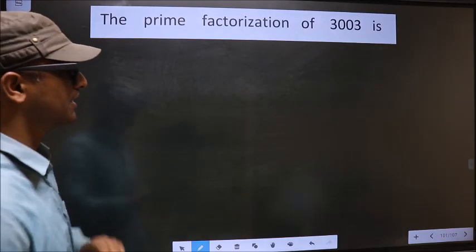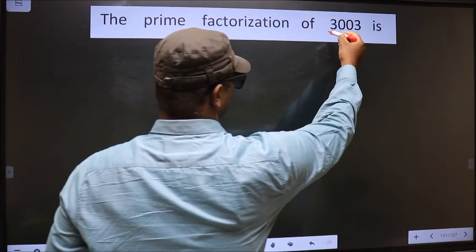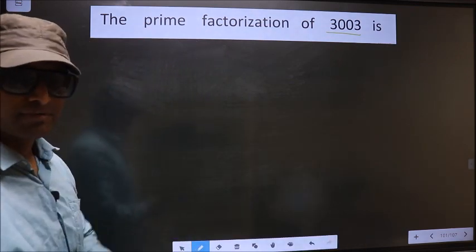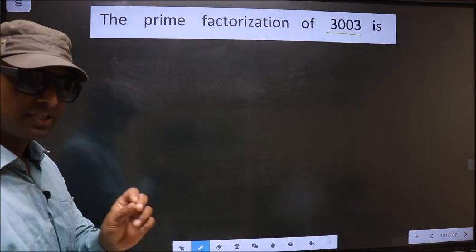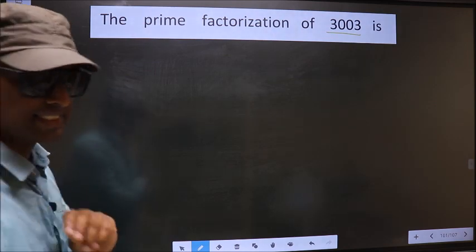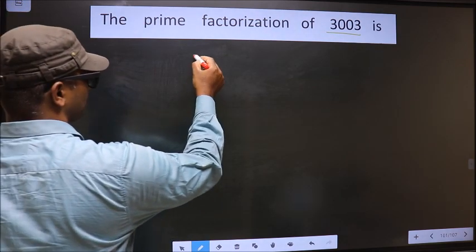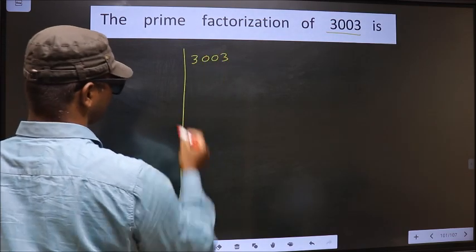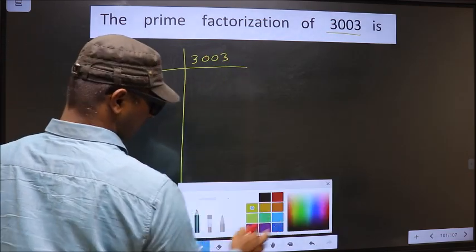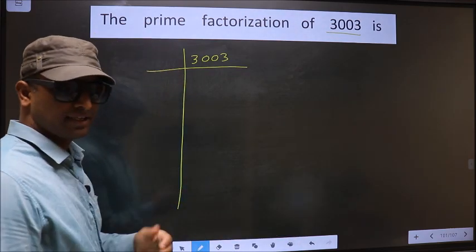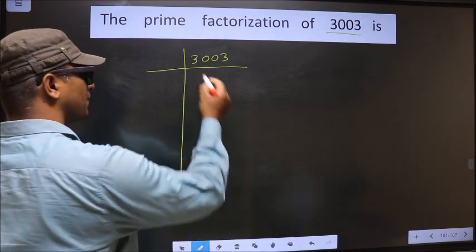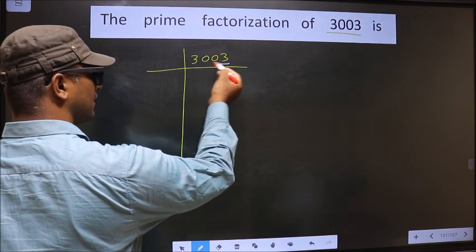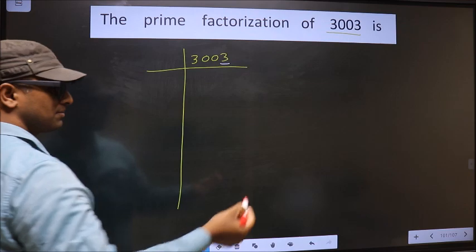The prime factorization of 3003. To do prime factorization, first we should frame it in this way — that is 3003. For this number, the last digit is 3, which is not even, so this number is not divisible by 2.